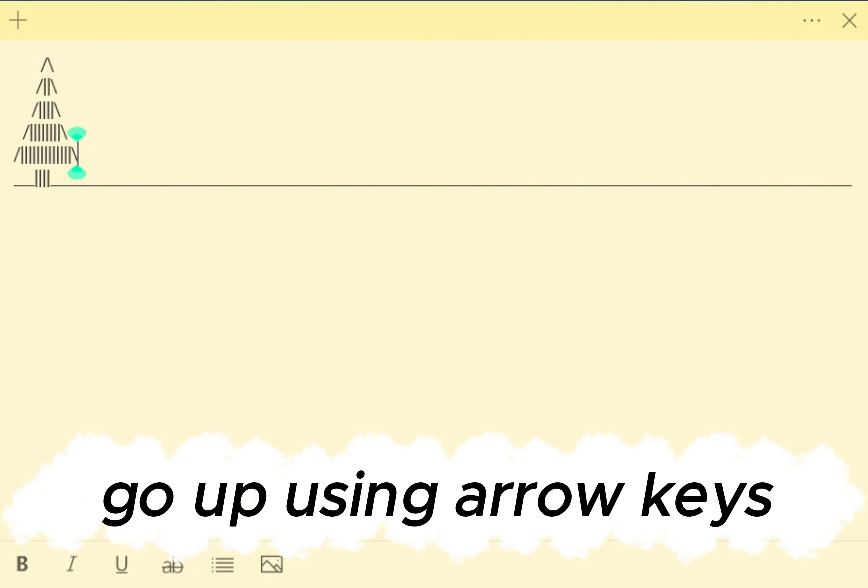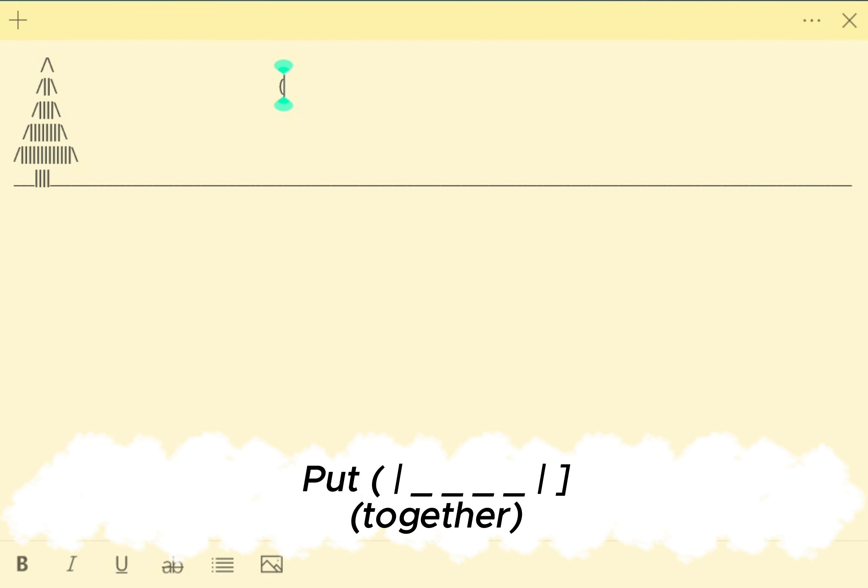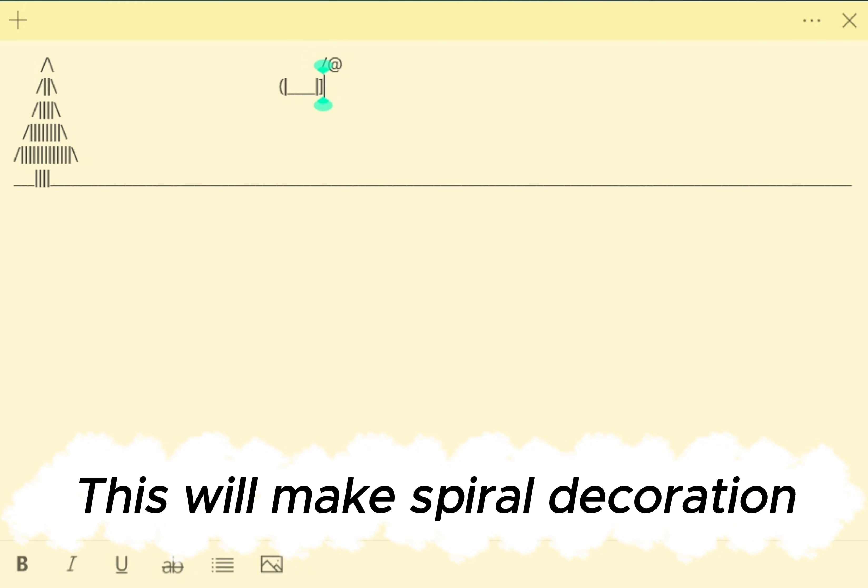Go up using arrow keys. Now we will make Santa sleigh and reindeers. Good. Now go up. Put. This will make spiral decoration.